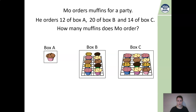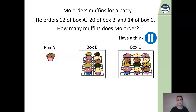Moe orders muffins for a party. He orders 12 boxes of A, 20 boxes of B and 14 boxes of C. The question is: how many muffins does Moe order altogether? Pause the video and think about what calculations you might need. Box A is easy — he has 12 of them and there's only one in each box, so 12 times 1 gives us 12.